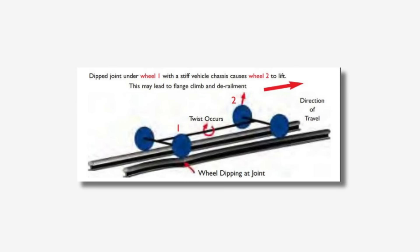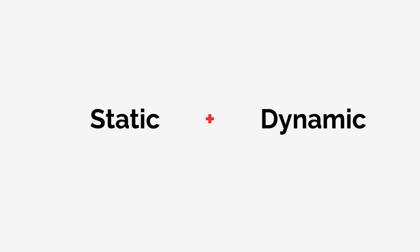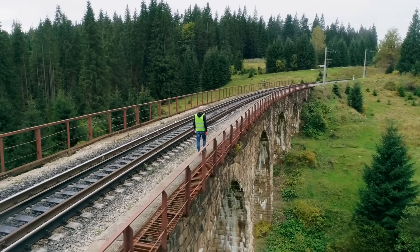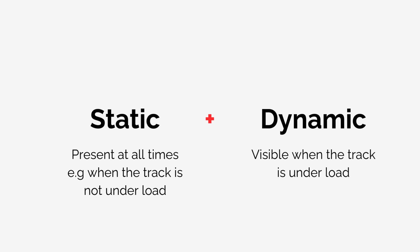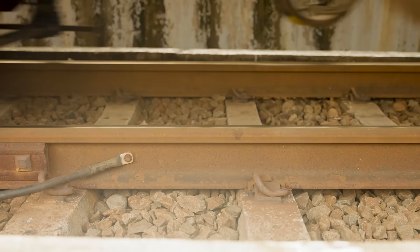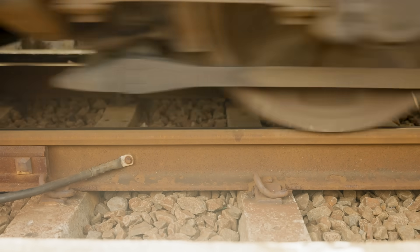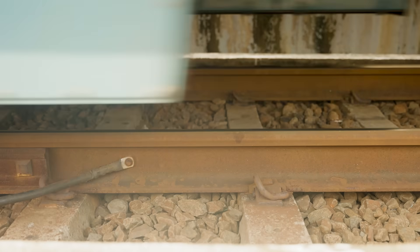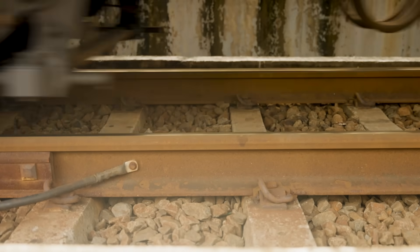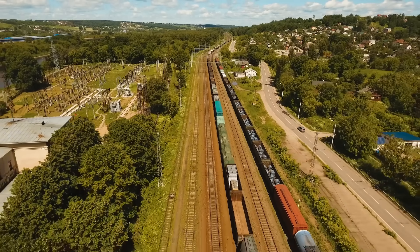When it comes to a twist, there can be a combination of static and dynamic twist. Static means the difference in the cross level can be seen at all times, like by an inspector walking through. Dynamic, on the other hand, is only visible when the track is under load, like that of a passing train. You could have a small static twist fault that is then four times worse when a train, with its weight, pushes the track down as it passes. This is why gathering both static and dynamic readings is so important — it gives the actual value of twist present so the risk can be properly classified.